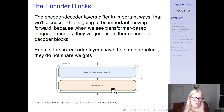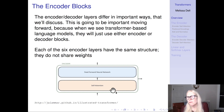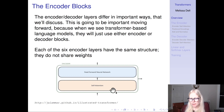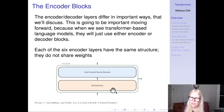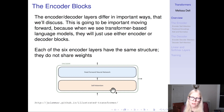The encoder and decoder layers differ in important ways we'll discuss. Even though machine translation is not our primary application, it's important to understand these differences because next class we're going to see encoder language models and decoder language models. For example, GPT-3 would be a decoder language model, and BERT — another one you've probably heard of — would be an encoder language model.